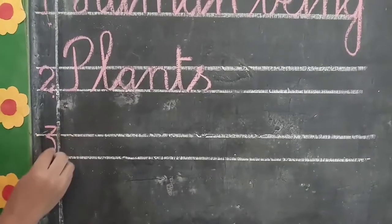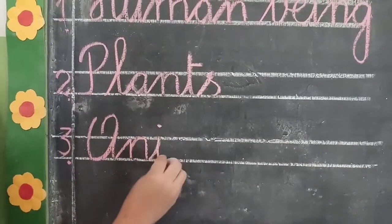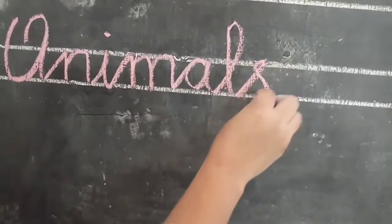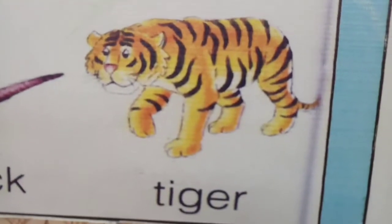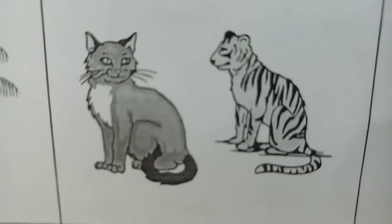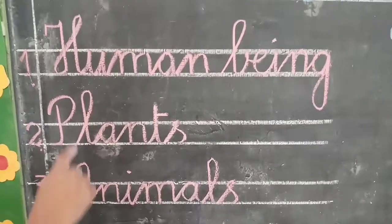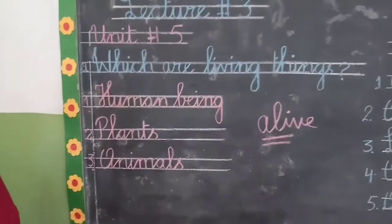And number 3 is animals. A-N-I-M-A-L-S, animals. Animals mein jaise ke ye tiger hai, dog hai, horse hai, aur ye cock hai — ye sab animals mein aatei hain. Aur is picture mein bhi aap animals ko dekh sakte hain. Human beings, plants, animals — all are living things. Ye sab ke sab jo hain, wo living things mein aatei hain.